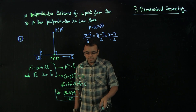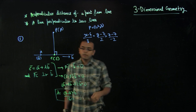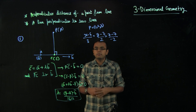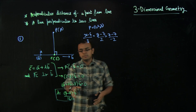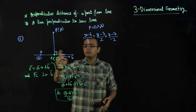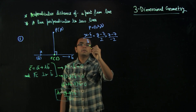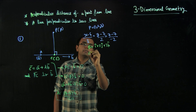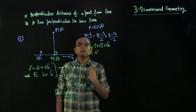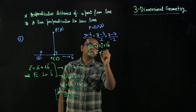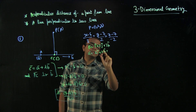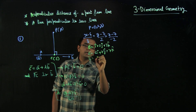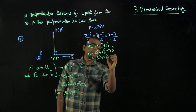Now how will we find lambda? We know the formula for lambda. I suggest you remember it, but you may also quickly derive it on paper. It is easy to remember: lambda equals (P − A) · B divided by mod B squared. Here P vector is i + 2j + 3k, A vector is 6i + 7j + 7k, and B vector is 3i + 2j − 2k.